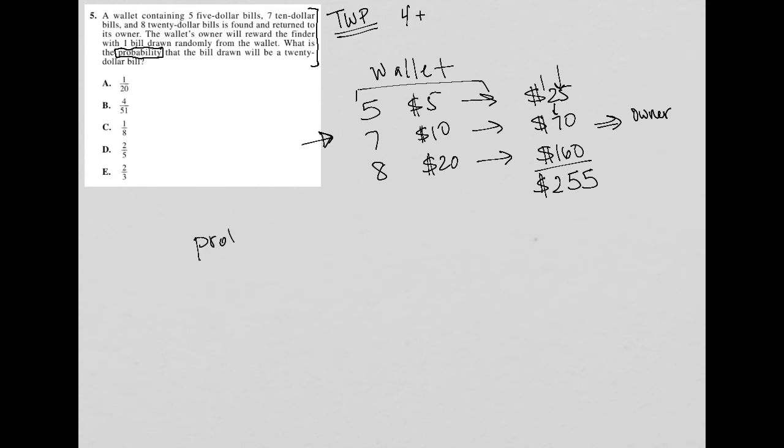probability on this test will always lead to a fraction where the numerator is what you want. And the denominator is the total that you are choosing from, right? Total number of things that you're choosing from. So what is it that we want? The number of things that we want. We want to pull out randomly a twenty dollar bill.